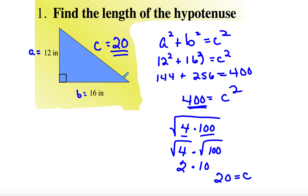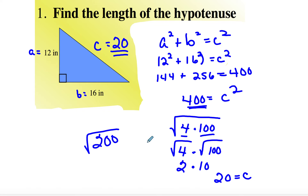Some of the ones you're going to have on the homework are not going to come out evenly, so you can basically put that and then do the square root. You can do that into your calculator, or you can also use the scientific Desmos. It will work.